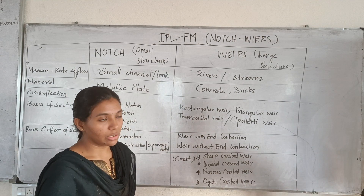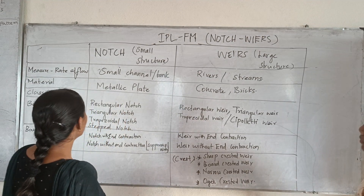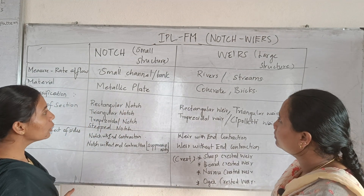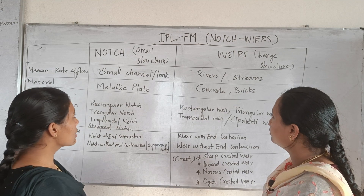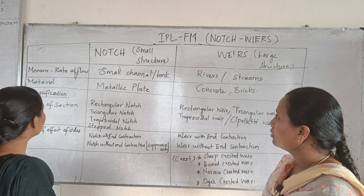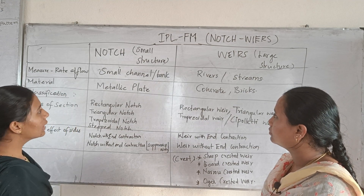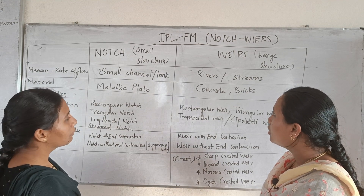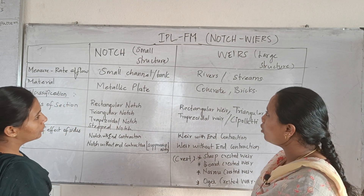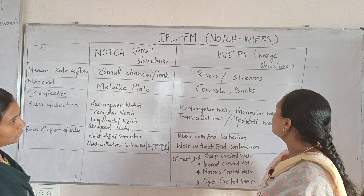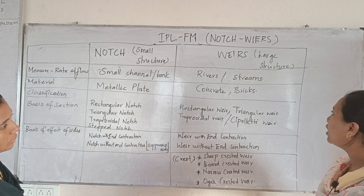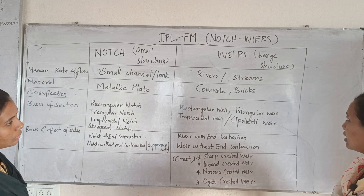The topic is Notches and Weirs. First, a notch is a small structure, while a weir is a large structure.